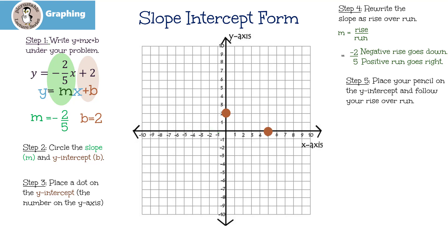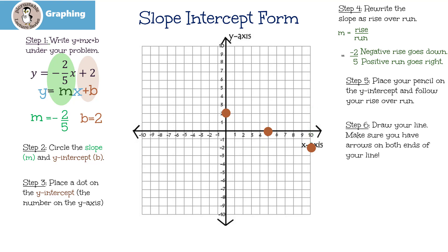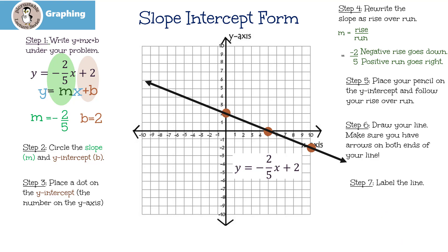Let's do it one more time: go down 2 and then run 5, and there's our next dot. Step 6 is to draw our line and make sure that we have arrows on both ends. Our last step, step 7, is to label the line. And we're done!